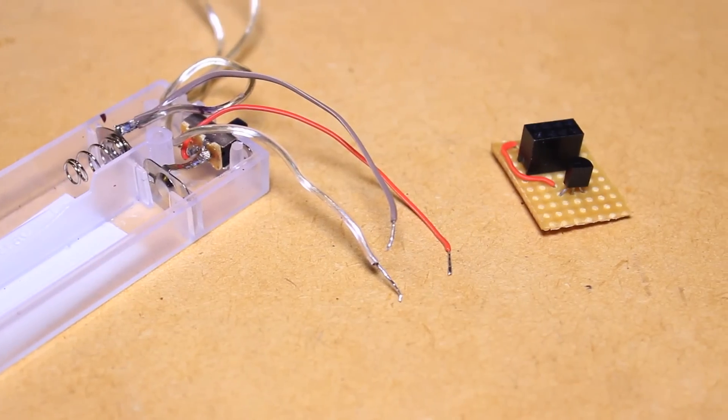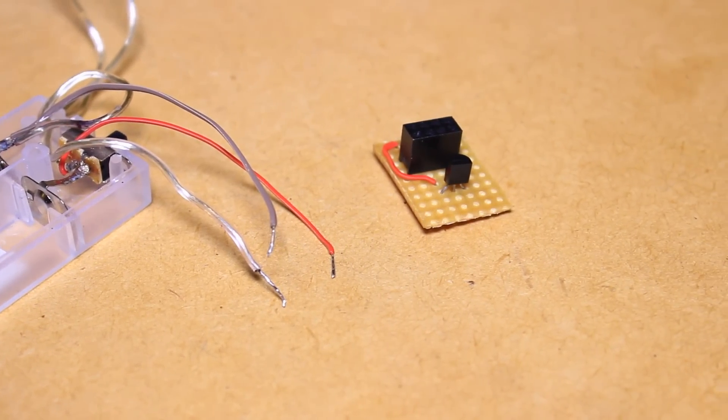Next, solder another wire to the ground connection on the battery pack and the other end to the ground pin on the ESP module.